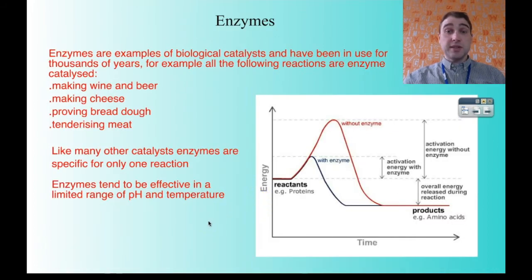Enzymes are biological catalysts. They're proteins that have a particular shape. And they're used all over the place. Wine, beer making, cheese making, proving bread dough, tenderizing meat. And also, most of the chemical reactions that are occurring in your body are catalyzed by enzymes. They're very important. Because they're biological, they're affected by things like temperature and pH. And we'll have a look at how temperature and pH affect them in another video.